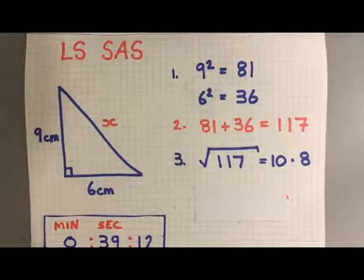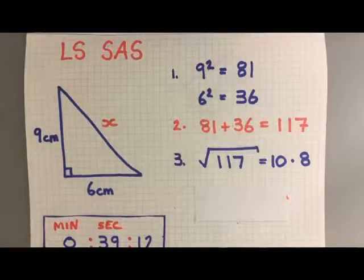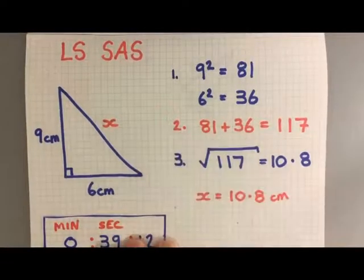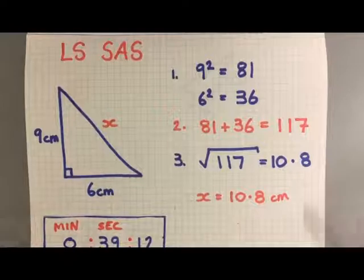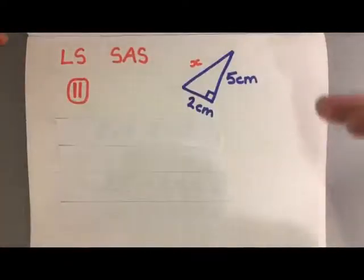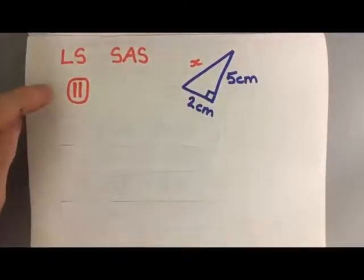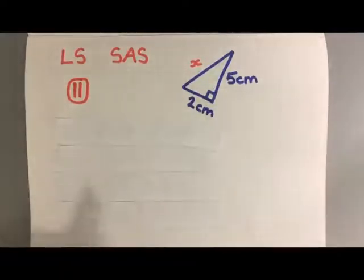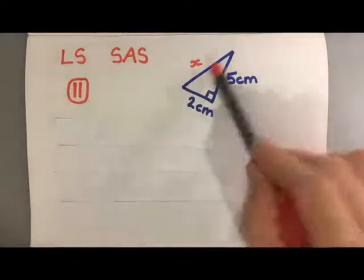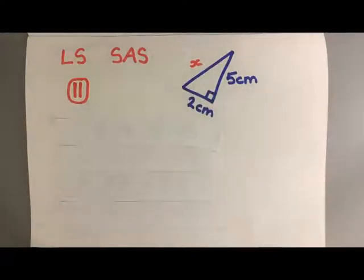Square root of 117 is 10.8 to one decimal place. x equals 10.8 centimeters. Okay, so if you'd like to pause the video now and have a go at this one where you've been asked to find the long side of this triangle, come back in a minute and we'll have a look at the answer.